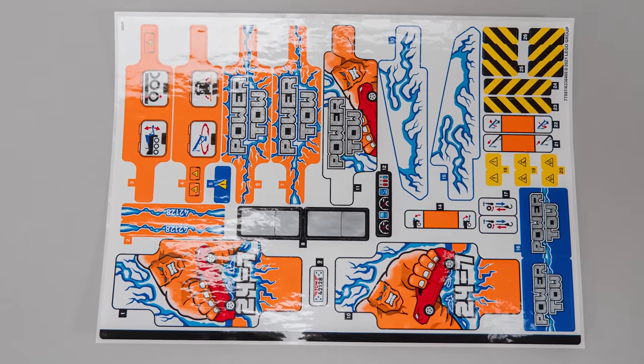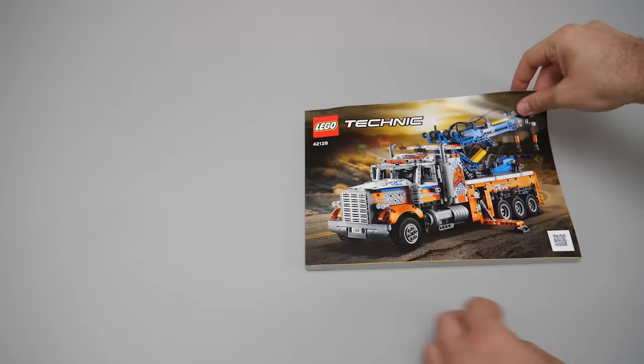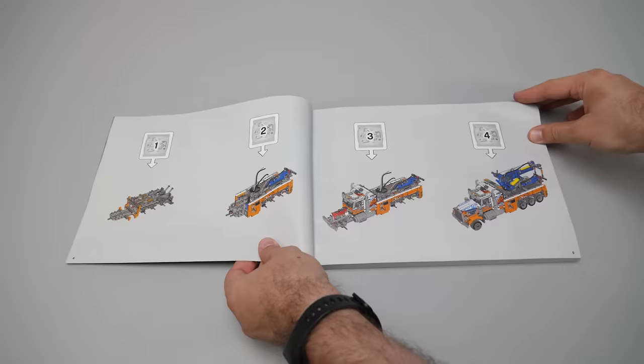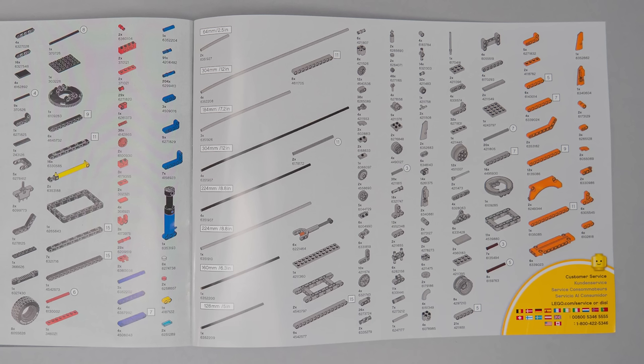The sticker sheet is quite big. Most of the stickers are for the big panels but we also get some 1x1 ones. The manual has nothing special in it. The build is only split to 4 phases, and here is the part list at the end of the book if you are interested. Now let's start building!